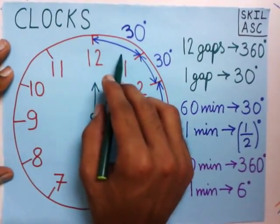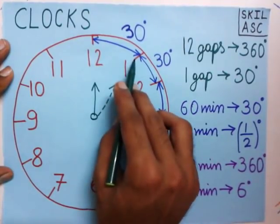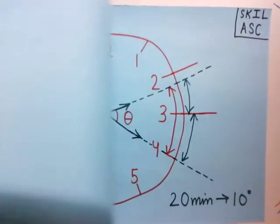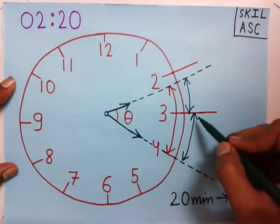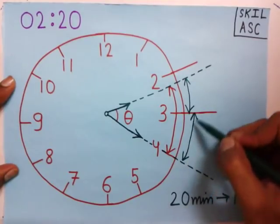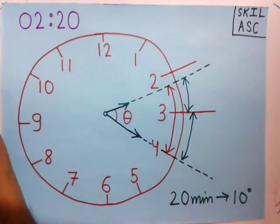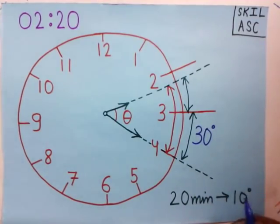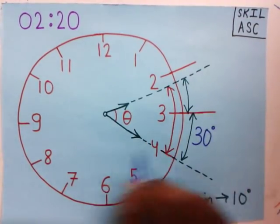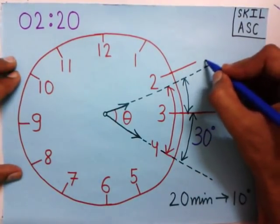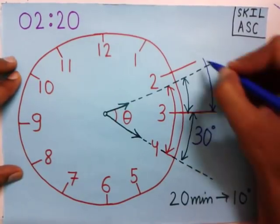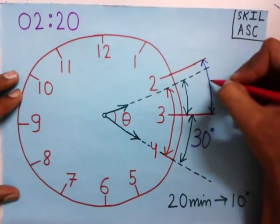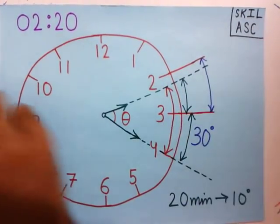If you move from 12 to 1 it will cover 30 degrees — every gap on this clock is 30 degrees. The angle between 3 and 4 is also one gap, so it is 30 degrees. Similarly, the angle between 2 and 3 is also a gap, so it is also 30 degrees.